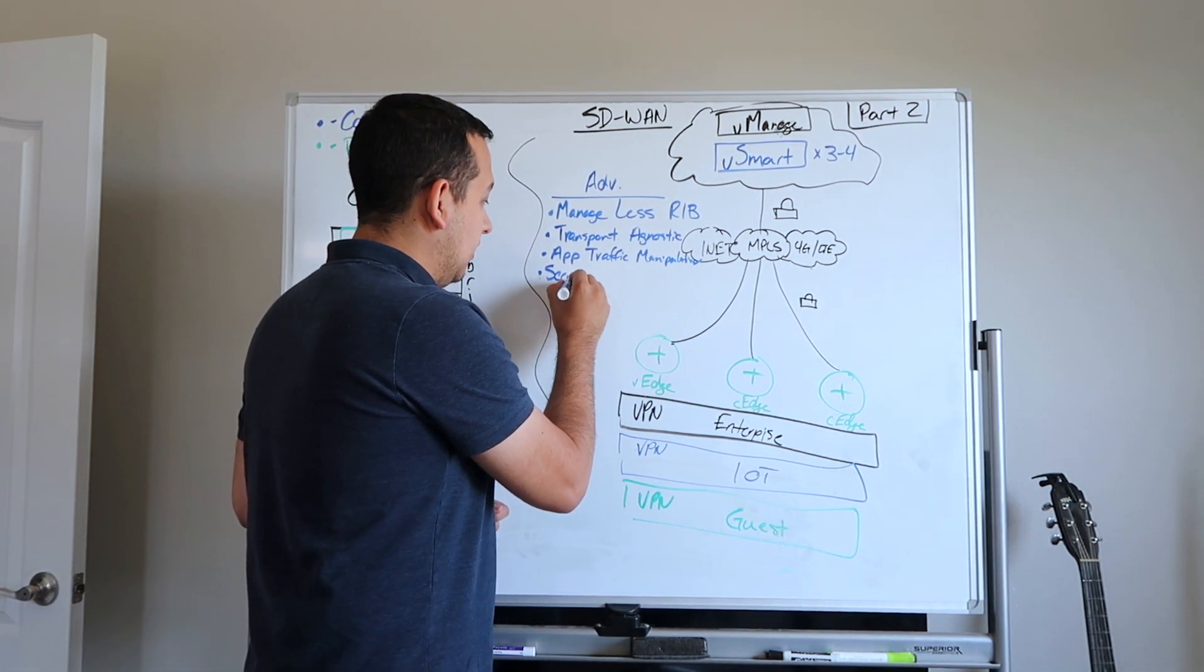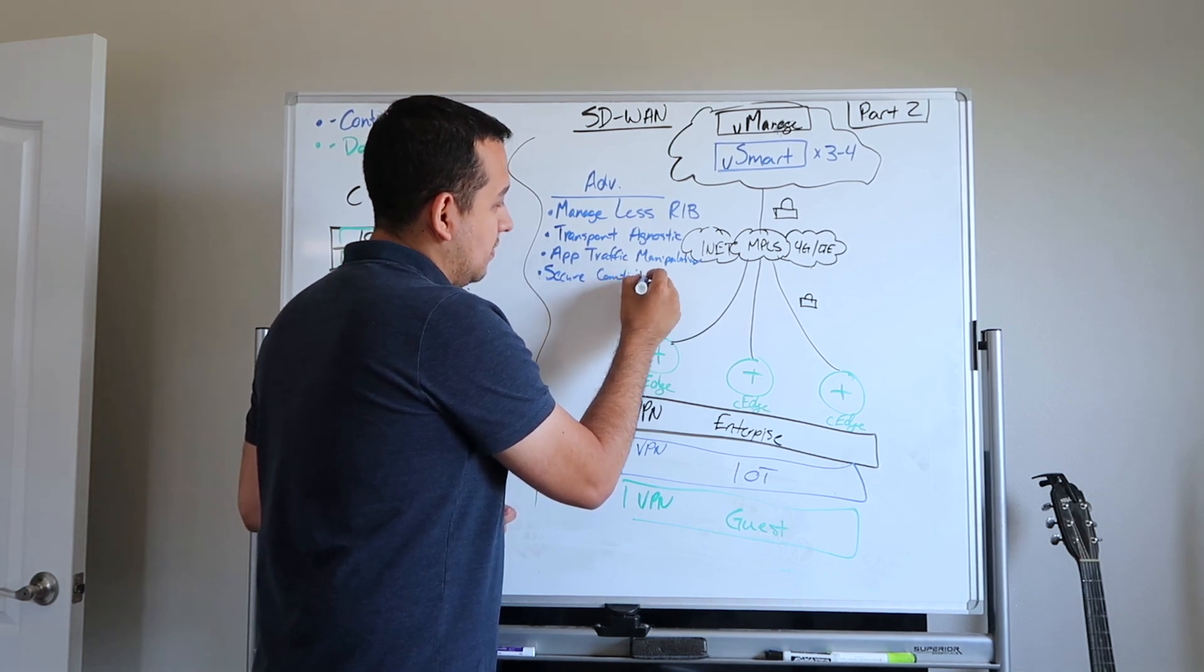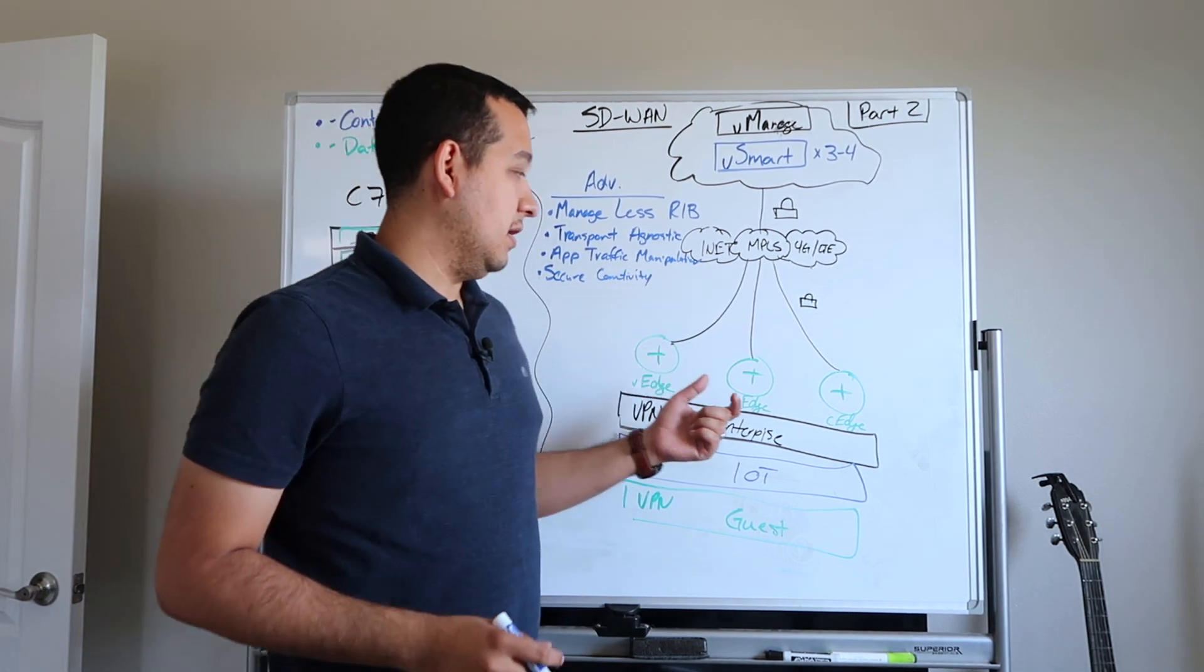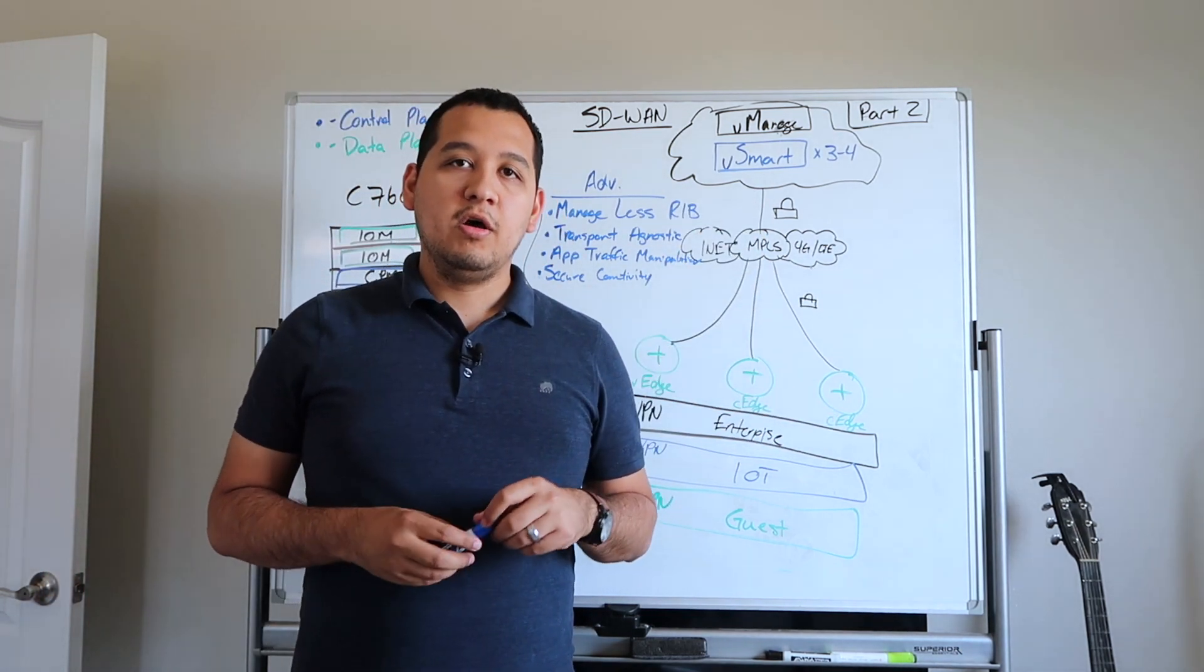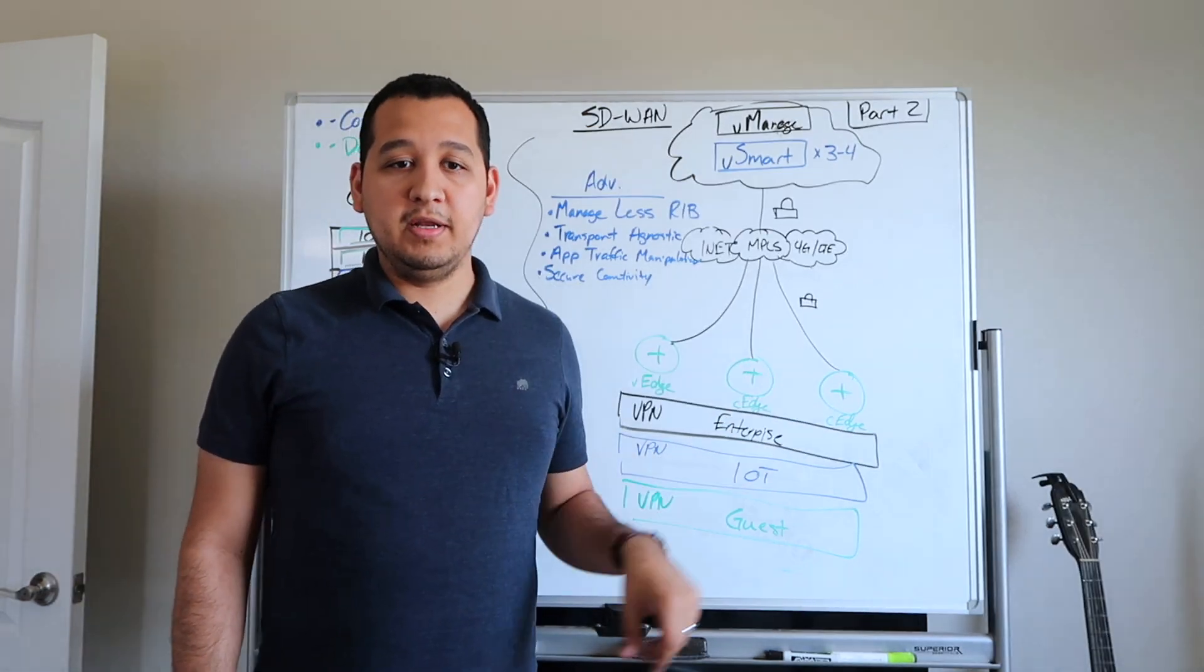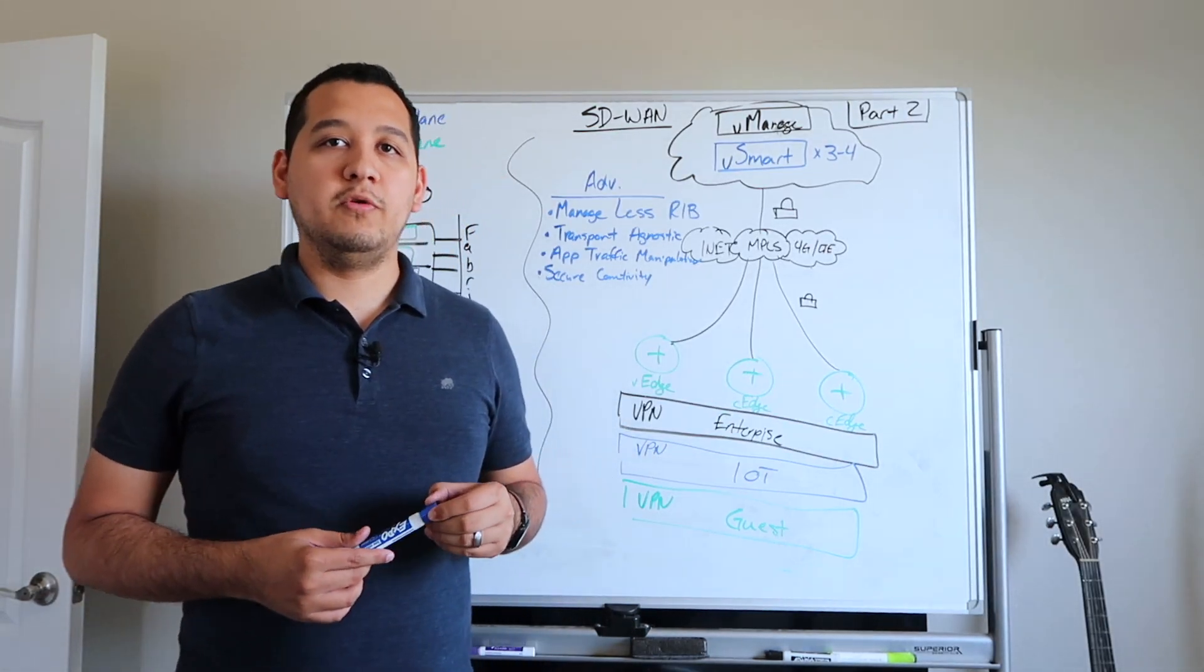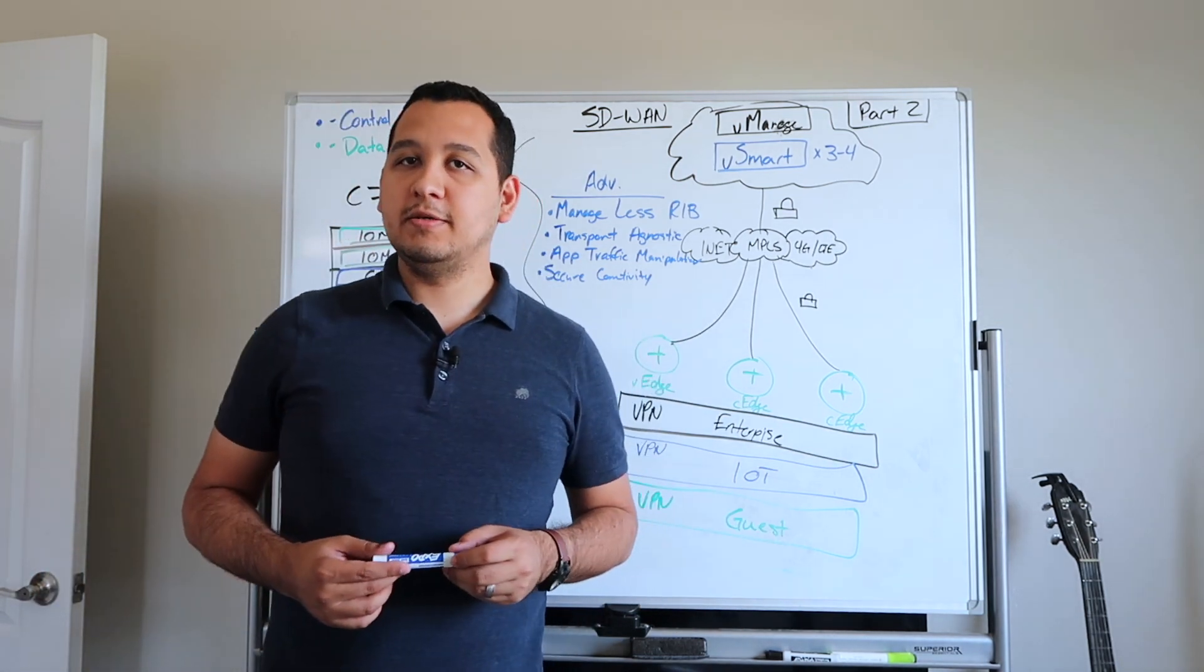Lastly, something we touched on just a little bit is around the security aspect of it - the secure connectivity between the routers and between the Vsmart and the Vmanage. All this is done through DTLS. It's completely encrypted regardless of whether it's going through the internet or whether it's going through 4G or MPLS.